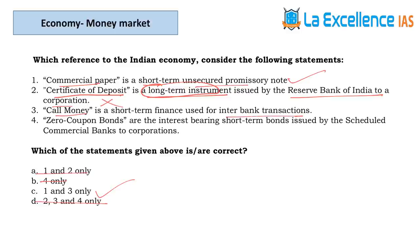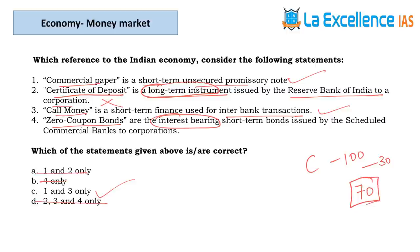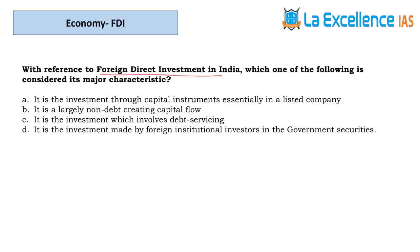Call money is short-term finance used for interbank transactions — correct. Zero coupon bonds — described as interest-bearing short-term bonds. Zero coupon bonds are not interest-bearing; instead the interest is embedded as a discount. For example, a bond worth 100 rupees is sold at 70 rupees discount; at maturity you receive 100 rupees. The 30-rupee discount is effectively the interest given upfront. So zero coupon bonds are not interest-bearing.